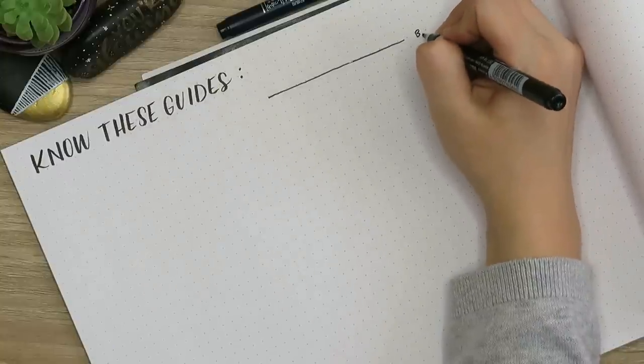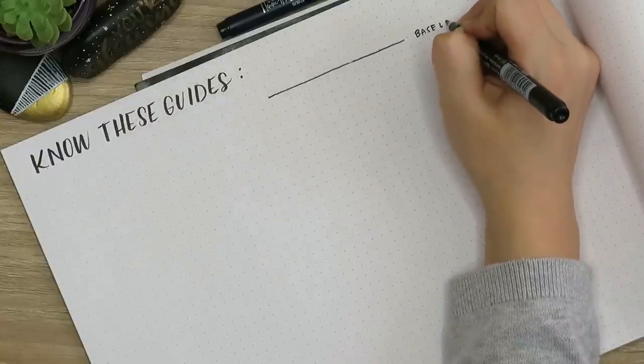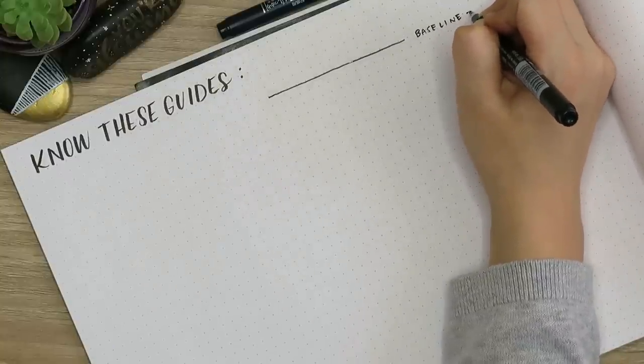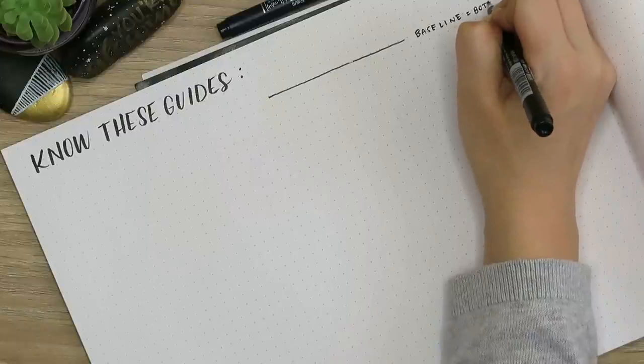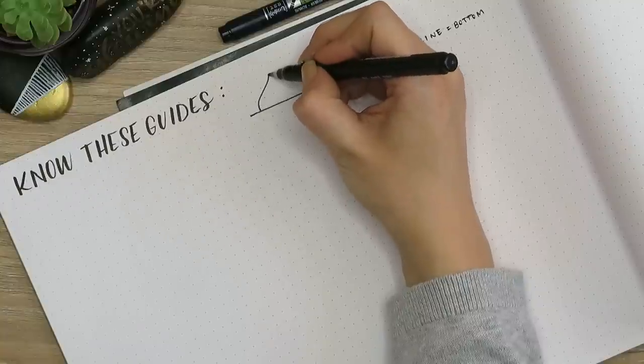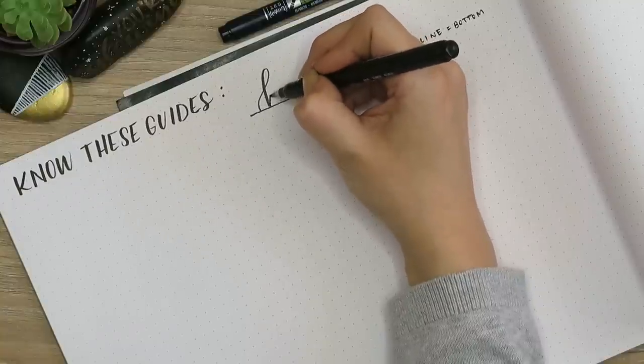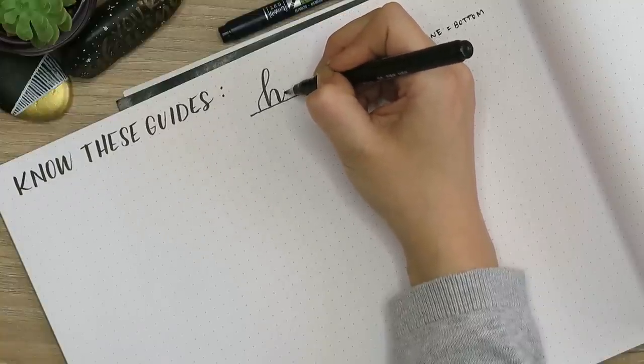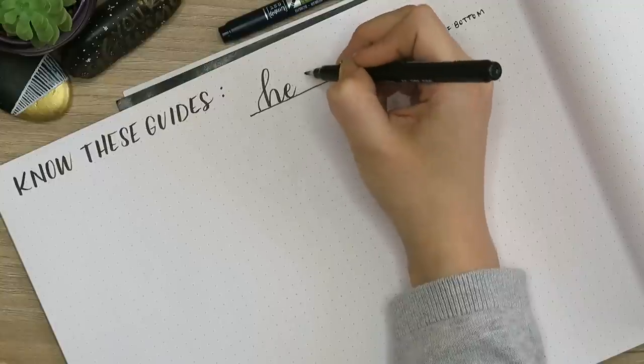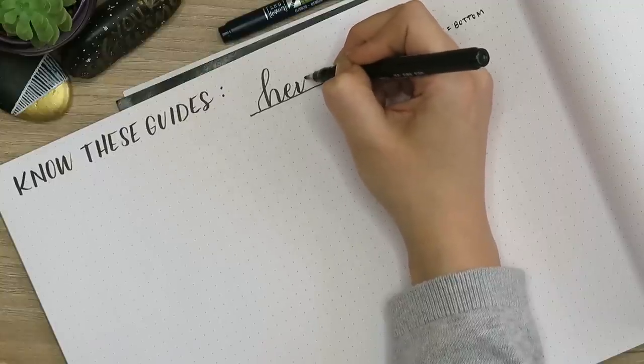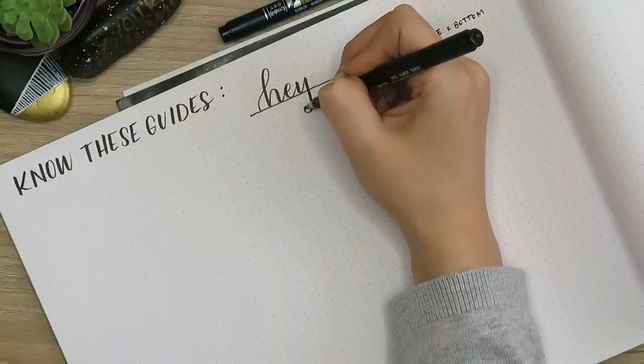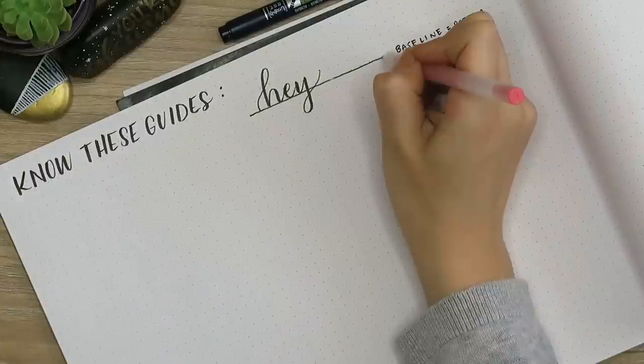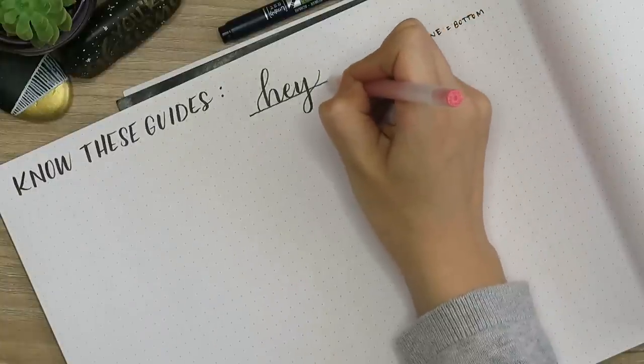There are some guides that will help you. A guide is something that you're going to follow when you letter so that it helps you have proportional letters and helps you know how you can be more consistent, where your letters need to hit on these different lines. Right now I'm drawing out the word 'hey,' and as you can see, I am focusing the bottom portion of the letters on the baseline.